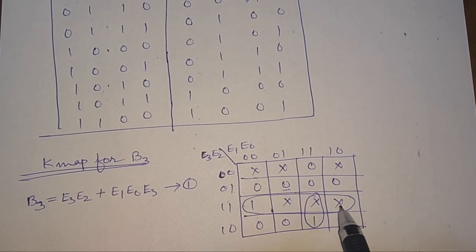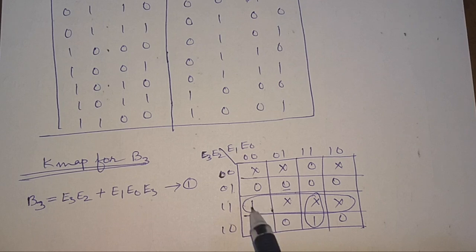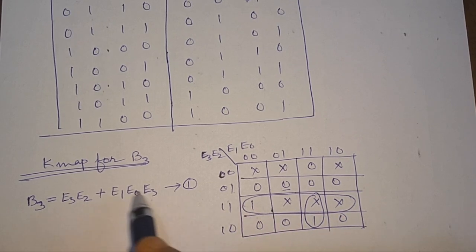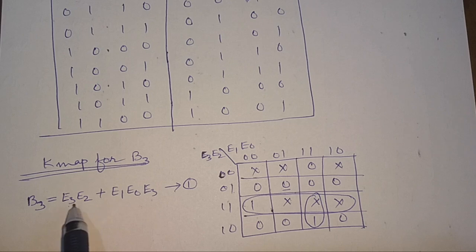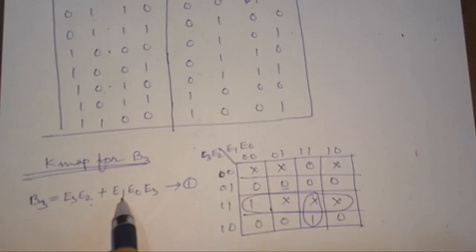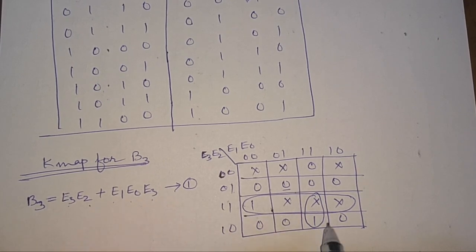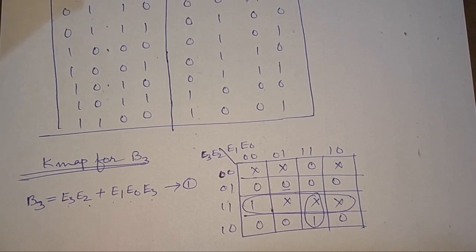From the K-map we can combine the groups. From one term we get E3 and E2, and from another term we get E1, E0, and E3. Similarly, we can find the Boolean expression for B2.